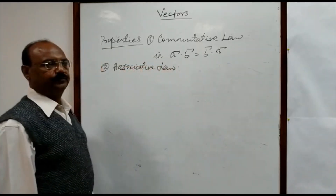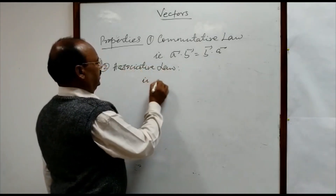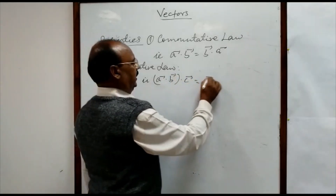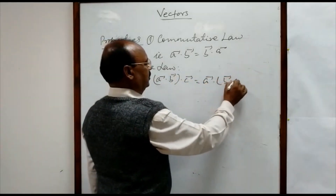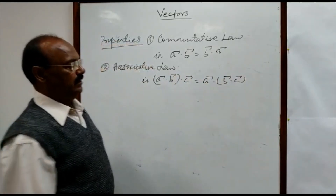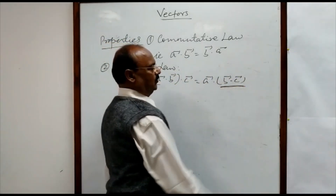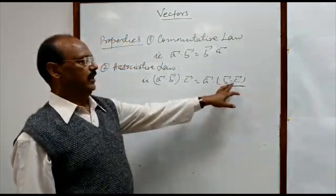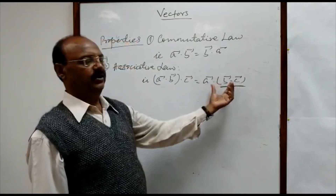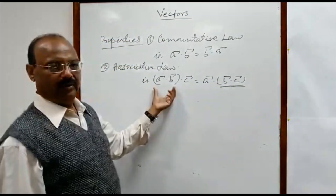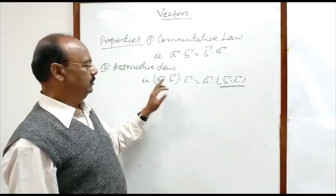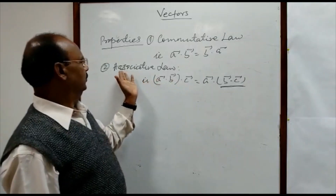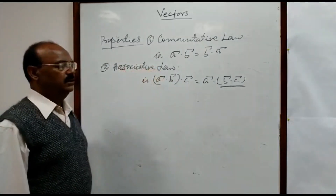The second property is the associative law. This means a dot (b dot c) equals (a dot b) dot c. The dot product inside the bracket is evaluated first, then we get the dot product of the outer vector with that result. So dot products are associative.